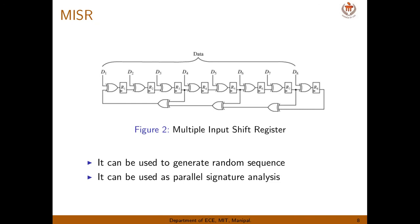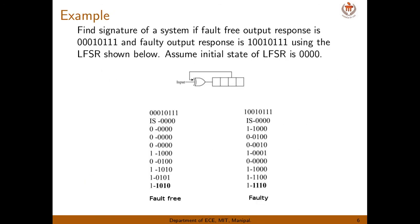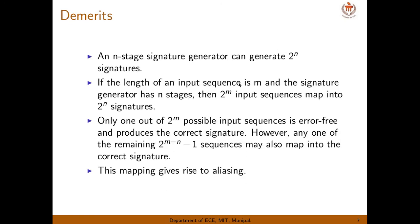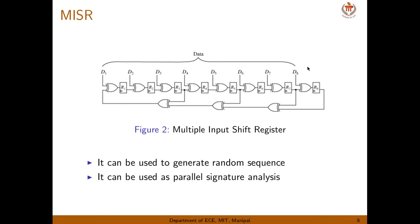The next block is MISR — multiple input shift register. It is similar to the LFSR, but in an LFSR you have only one data input plus feedback. In MISR, you can give 8 data inputs in parallel, each XORed with the shift register. Selected taps of the output are XORed and fed back to the first stage.